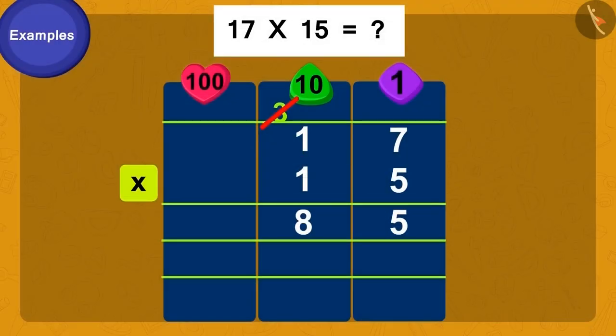Now we will multiply the 1 of 15 by the digits of 17 from right to left. We will write it in the second row. Before starting the multiplication process, we write a 0 like this in the unit space. First we multiply 1 by 7. Is it done? 7. We will write it like this. Now finally, 1 is multiplied by 1. That's 1. We will write it like this.